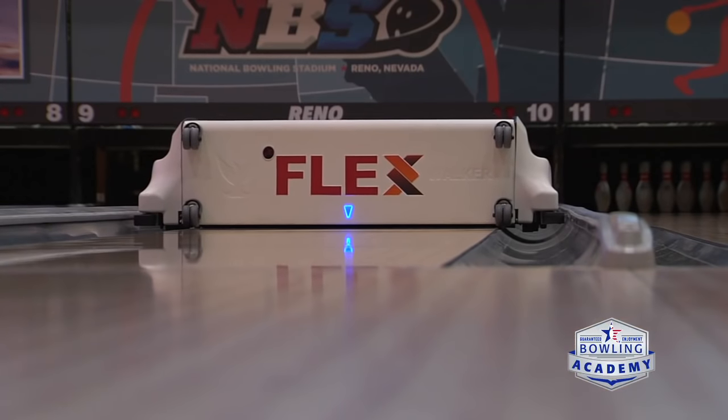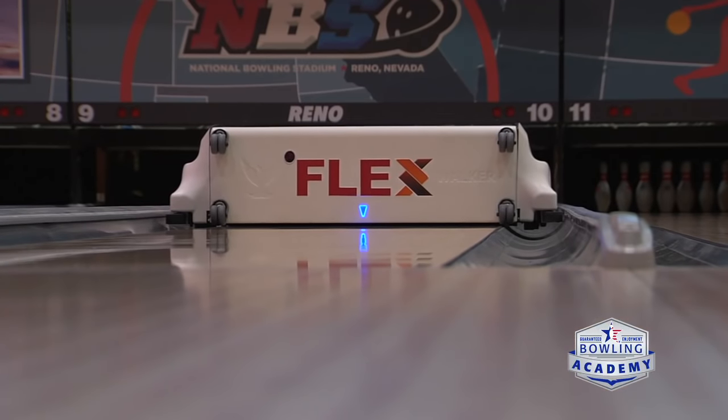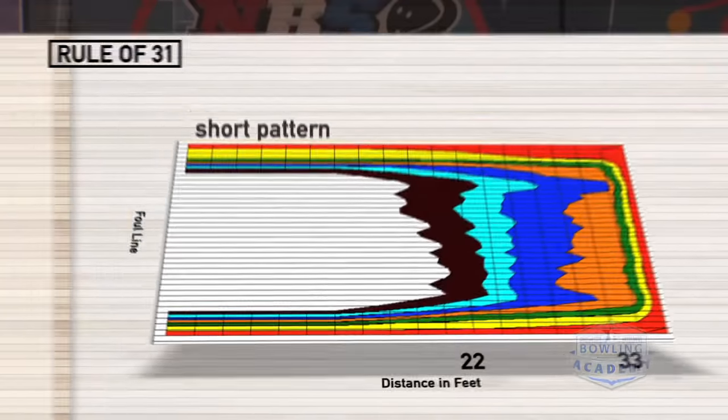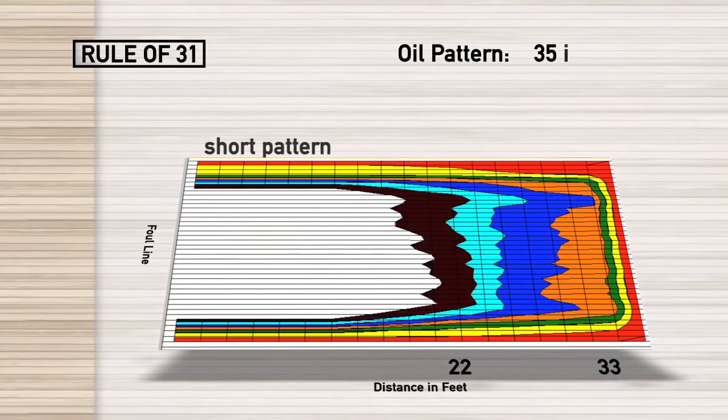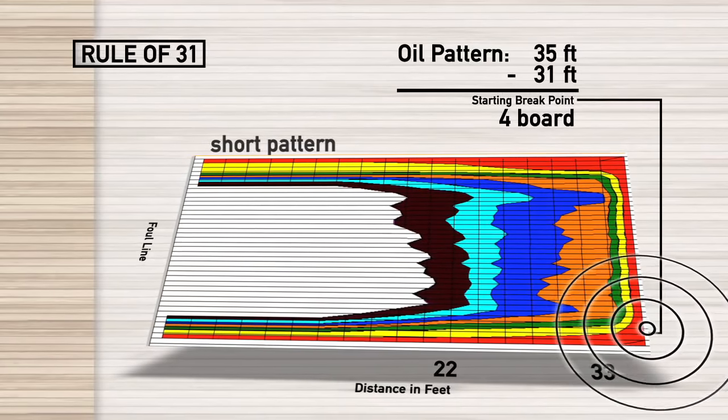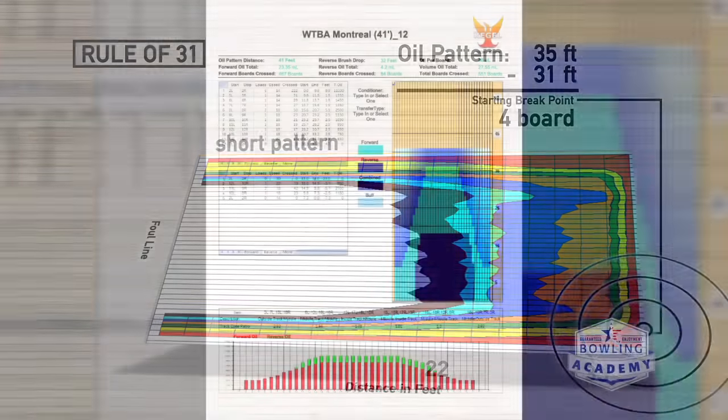That'll give you more margin of error. Lane surface is a factor — a higher friction lane surface will probably push you a little bit farther right, while a lower friction surface will probably be a little bit farther left. The same applies to the actual oil pattern load structure. If the load structure is a little bit wider, that exit point is going to be a little bit farther right. But the main thing is the actual pattern distance — that tells you where you want your ball as a good starting point at the end of the oil pattern.